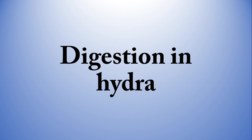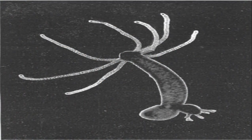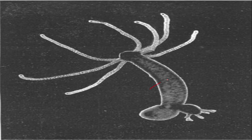Let us first discuss briefly what hydra is. As you can see here, this is a diagram of hydra. Hydra is an aquatic and diploblastic animal. Aquatic means it lives in water, and its body consists of two main layers. Do you know about diploblastic animals?